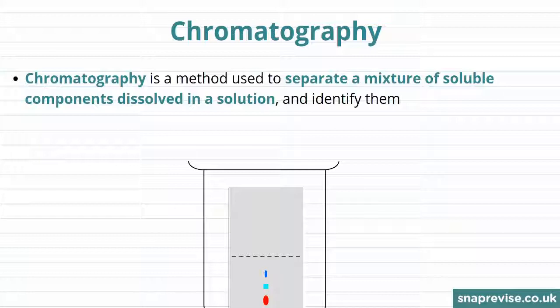An example of one of these physical processes is chromatography, which is a method used to separate a mixture of soluble components which are dissolved into a solution. Chromatography is especially useful because it can also be used to identify what these components are.